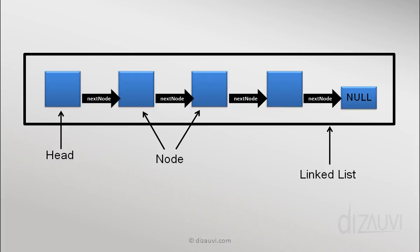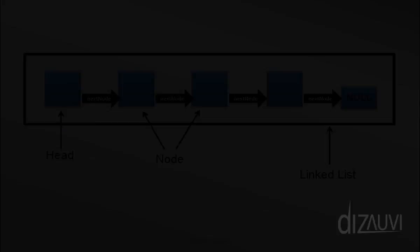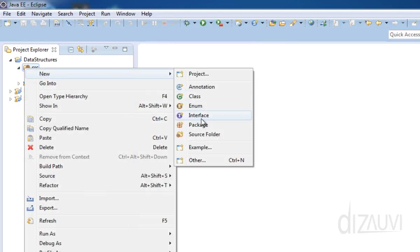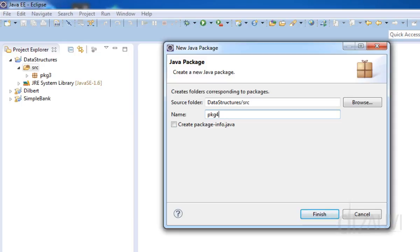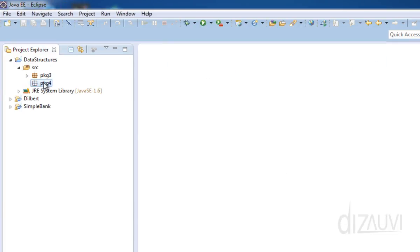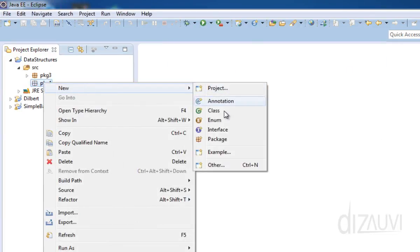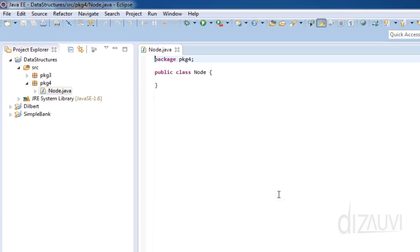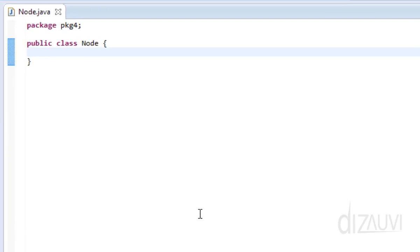Now let's write some code to create a node. In your IDE, let's create a new package for this chapter. Now inside this package, let's create a new class and call it Node.